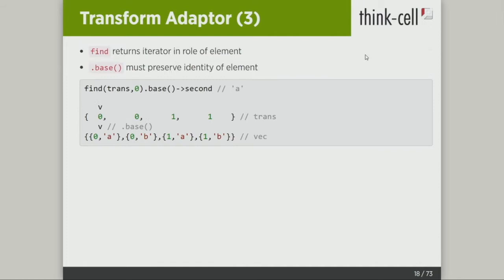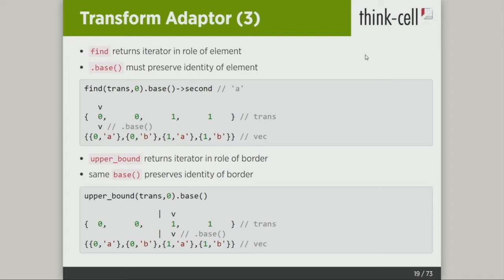Let's try the same thing with something that returns a border — upper_bound, for example. You have upper_bound, it gives you an iterator to the first element, then you call base(). In terms of borders, the convention is the border lies before the iterator we are pointing to. You can see that the identity of the border also gets preserved during this operation. Everything is fine.